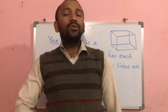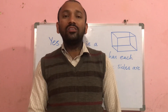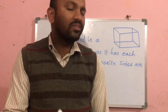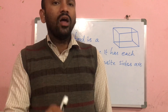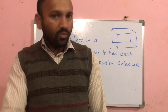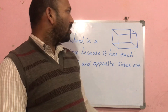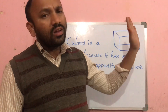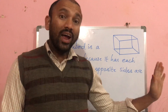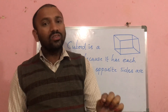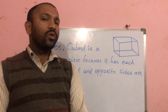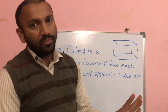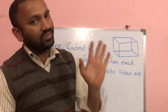A right prism means each angle should be 90 degrees, that is a right angle, and opposite sides should be equal. In a cuboid, opposite sides are equal and each angle is 90 degrees. So clearly, we can say a cuboid is a right prism.